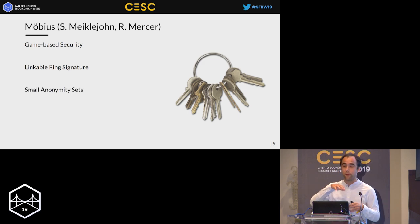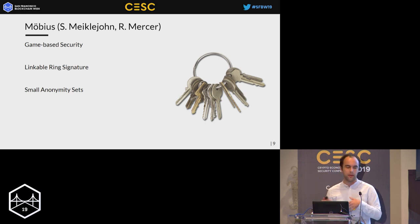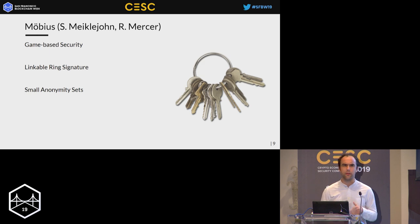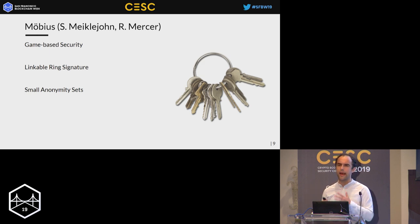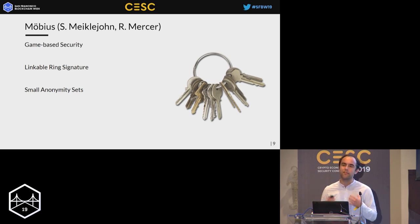The downside of this protocol is that verification of a ring signature linearly increases in the size of the anonymity set. With current Ethereum block gas limits of around 10 million gas, only 33 or 35 is the supported anonymity set size.